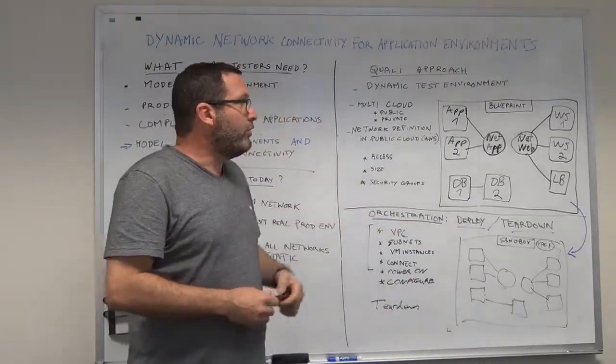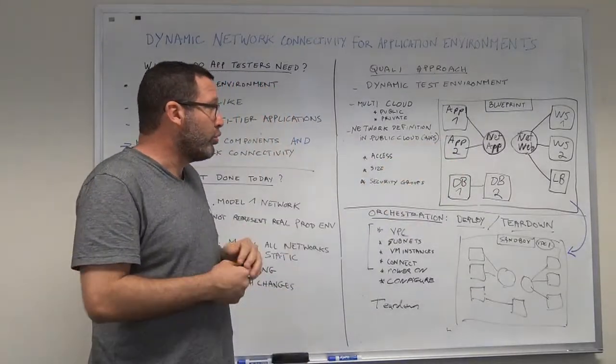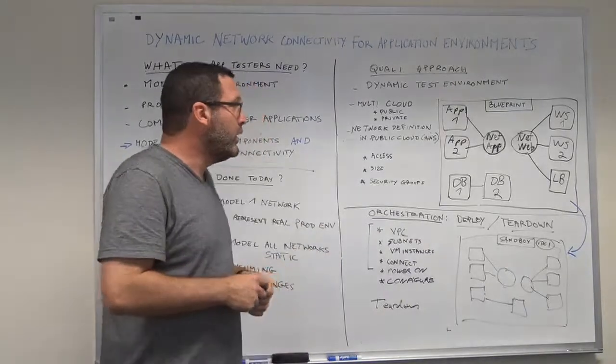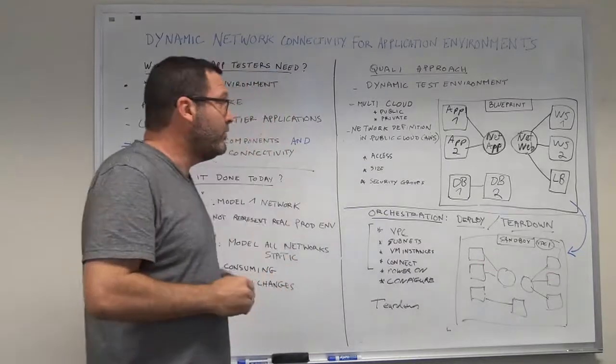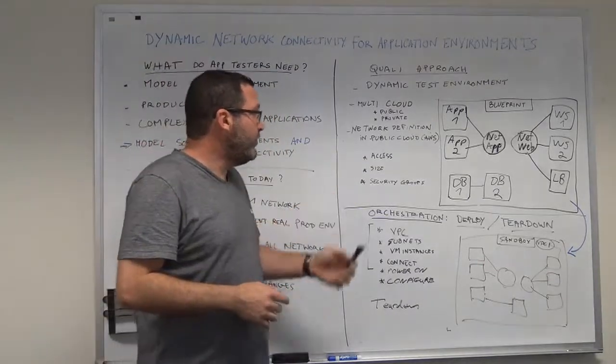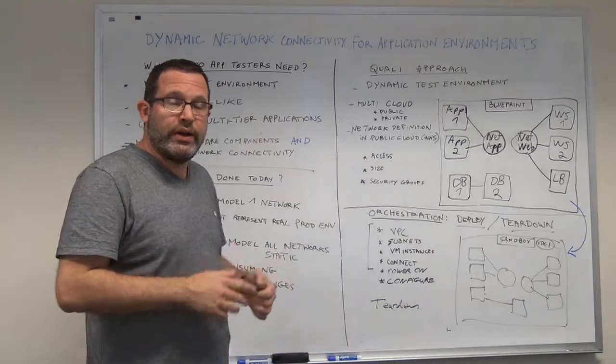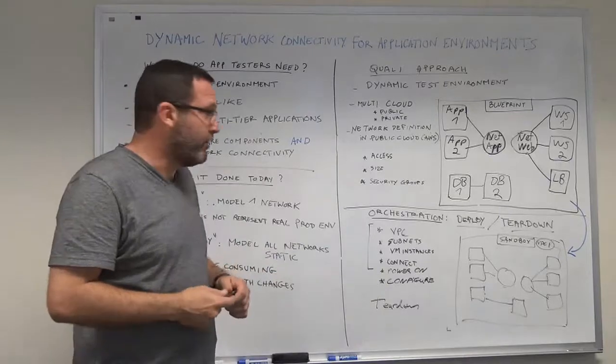Once I've added all of the components I need to my blueprint, I make the necessary network configurations. This includes the access level—meaning public or private network—the size of the network, meaning how many IP addresses I'd like to add to these networks, and the security definitions: which ports and which instances are available for communication from other ports in the environment.